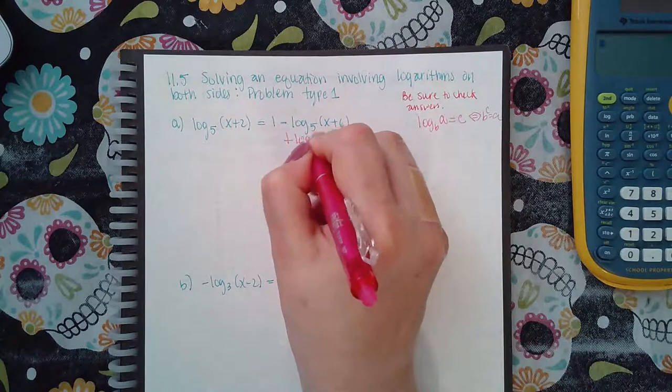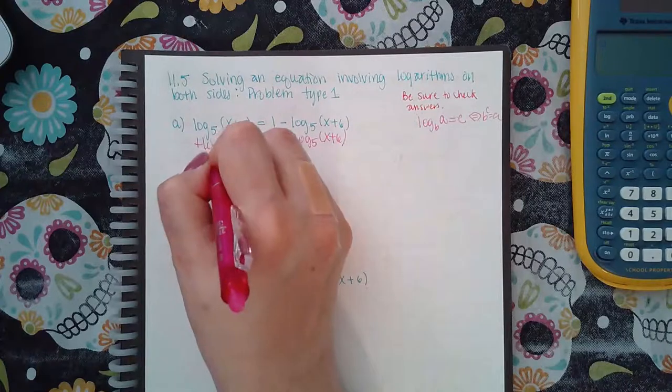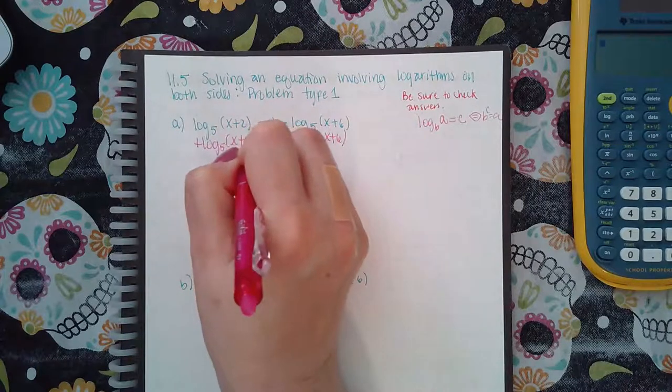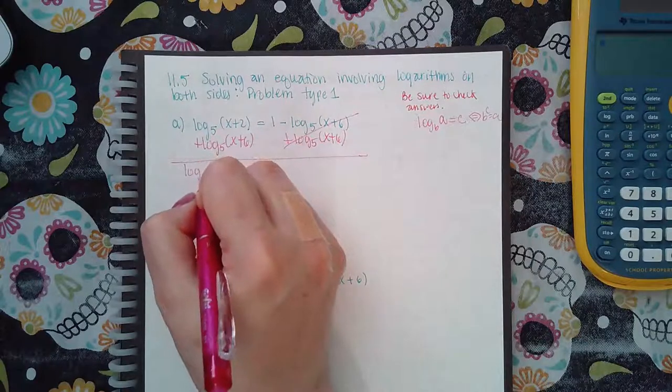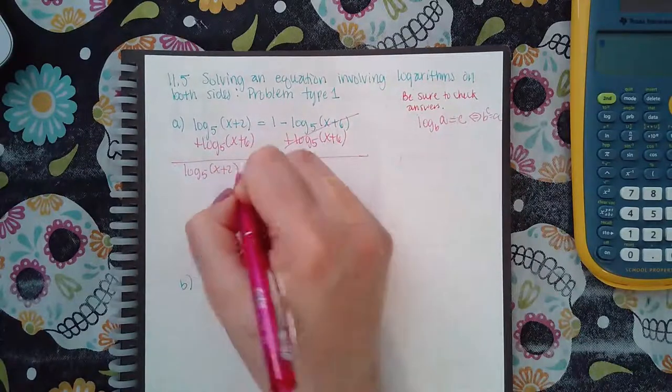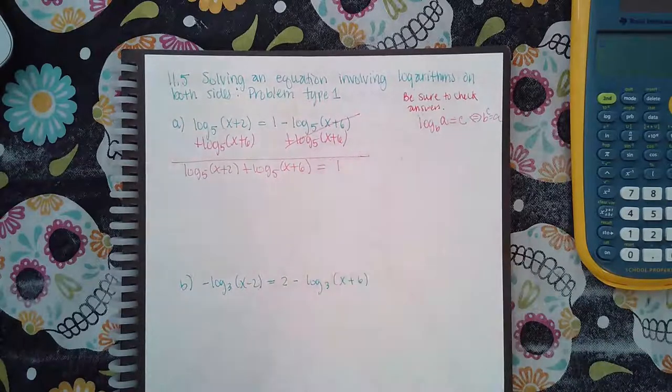So I'm gonna add log base five of x plus six to both sides. And so then what it looks like is log base five of x plus two, plus log base five of x plus six, equal to just the one.